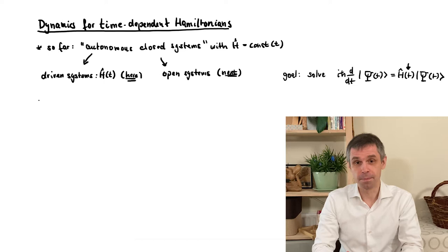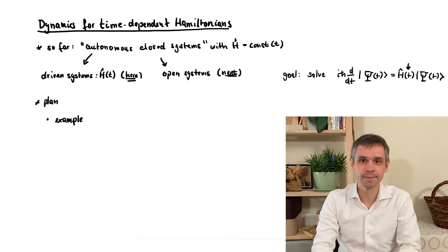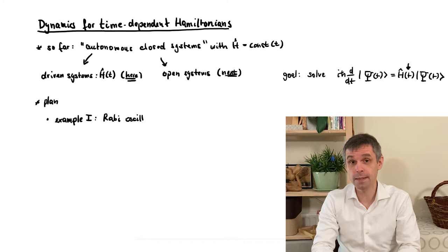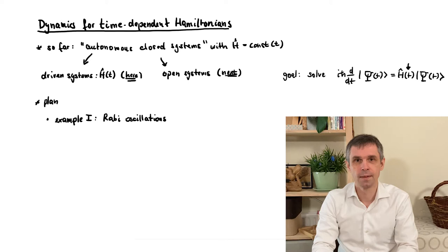The plan for the present chapter comprises two general discussions, which are sandwiched between three illustrative examples. We start with the example of a harmonically driven spin. This is an exactly solvable system in which we can obtain precise expressions for the dynamics, according to which the spin performs so-called Rabi oscillations.